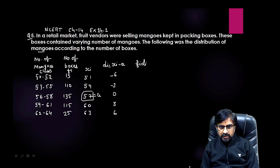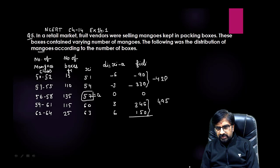Now directly multiply to find fi di. 15 times -6 is -90, 110 times -3 is -330, 135 times 0 is 0, 115 times 3 is 345, and 25 times 6 is 150. Now you need to add this. You can see negatives and positives, so let me add. -90 plus -330 is -420, and 345 plus 150 is 495. If you subtract, 495 minus 420 gives you positive 75. So 75 will be your fi di. You can see how easily we did this with assumed mean method.